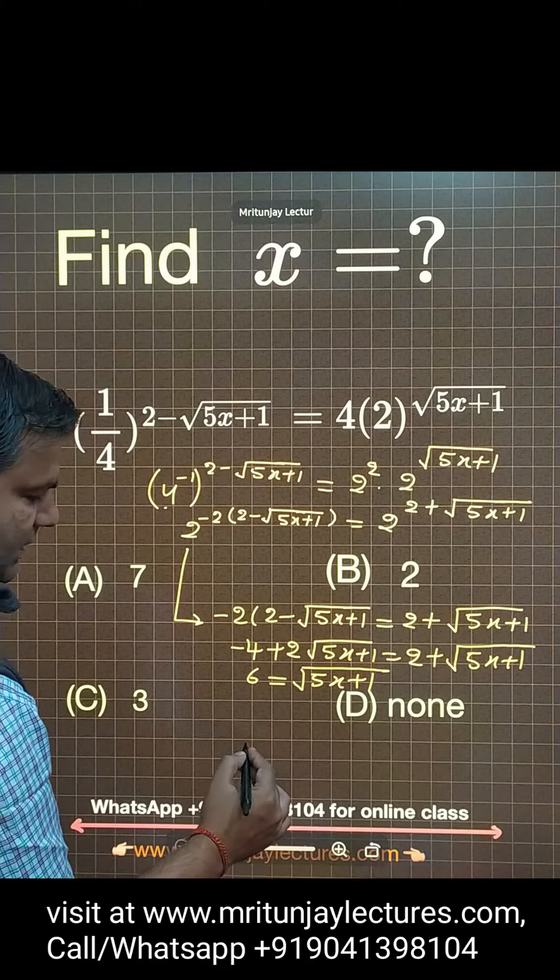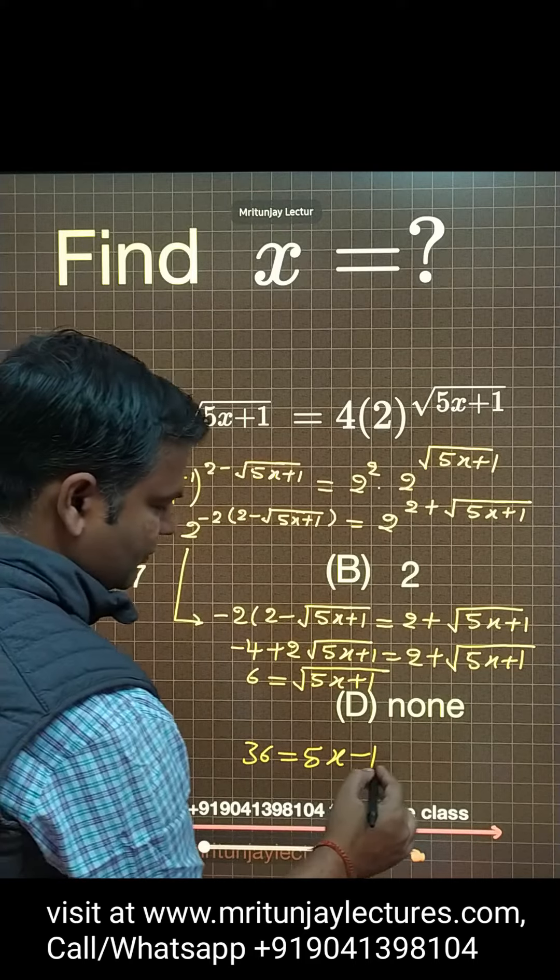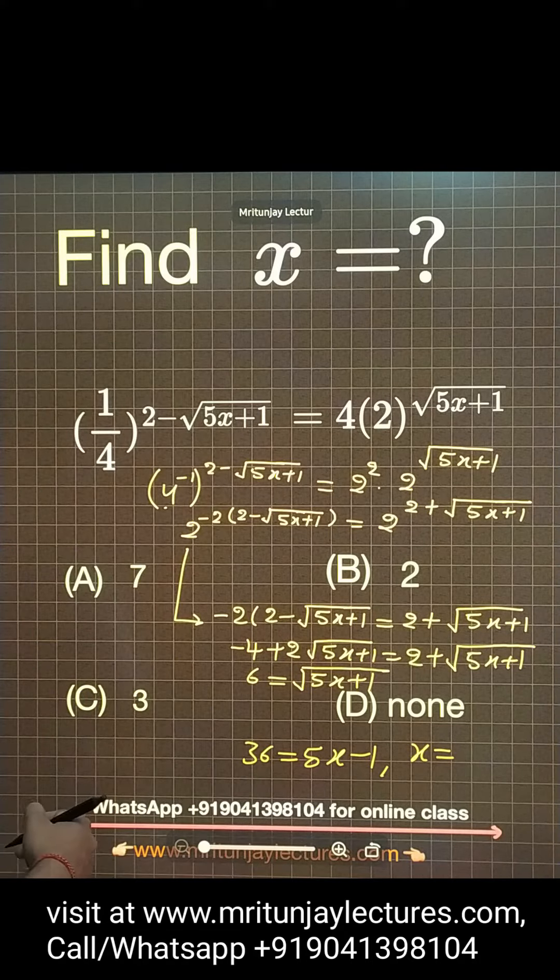Now squaring both sides, then we got 36, this is equal to 5x minus 1. So what about x, x is equal to 37 by 5.